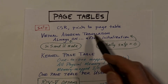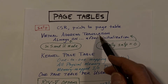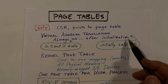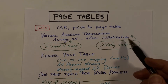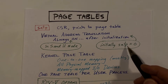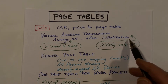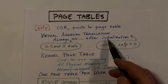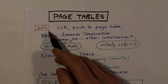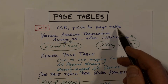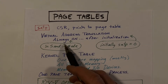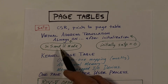Virtual address translation in the RISC-V core is always turned on after initialization is complete. Initially SATP is zero, and when it's zero there is no translation occurring. But in the initialization phase we will set SATP to point to the page table that we want to use.